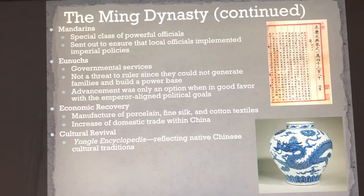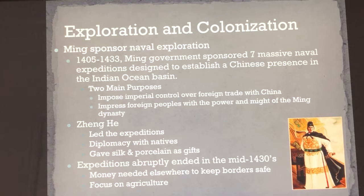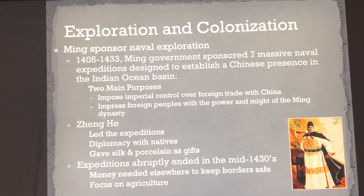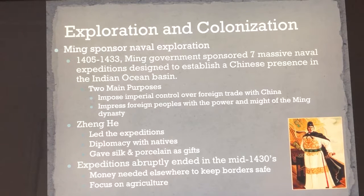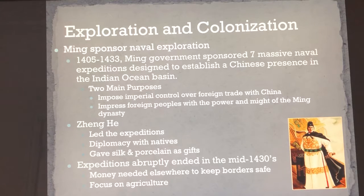We see a cultural revival — the Yongle Encyclopedia is created, charting the traditions of the Chinese people. The Mings are also going to sponsor naval exploration, and these expeditions will go out into the Indian Ocean Basin. They will control foreign trade with China — basically who's allowed in and who's not — and also control the exchange of gold for paper money. Foreign people had to have favor of the Ming Dynasty.